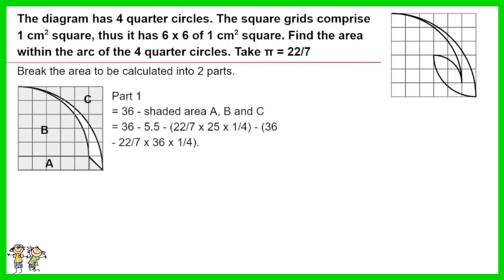Part 1 equals 36 minus shaded area A, B and C. Work out the equation, you have 3 and 3 over 14.